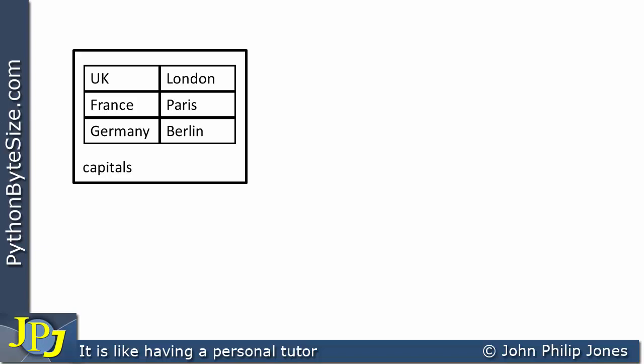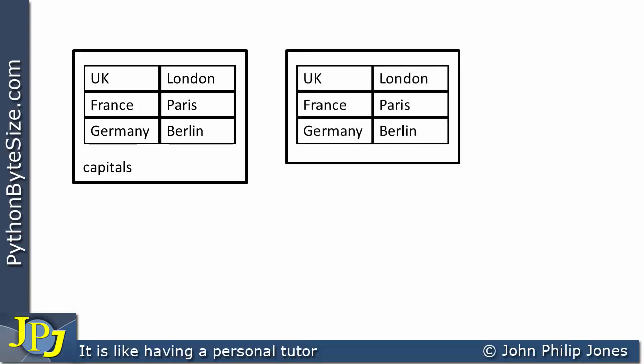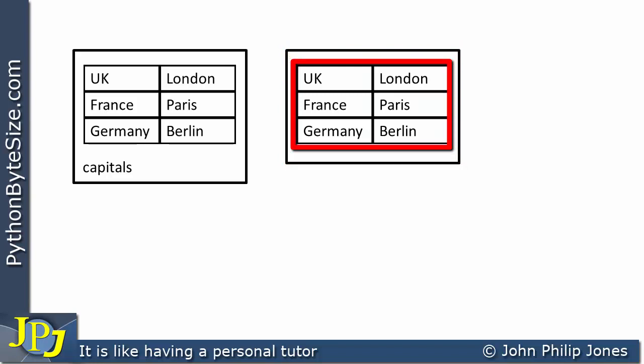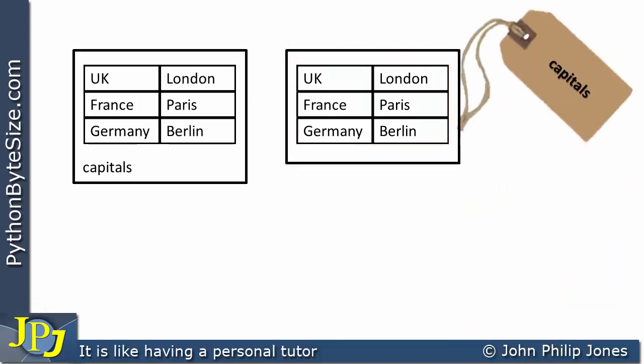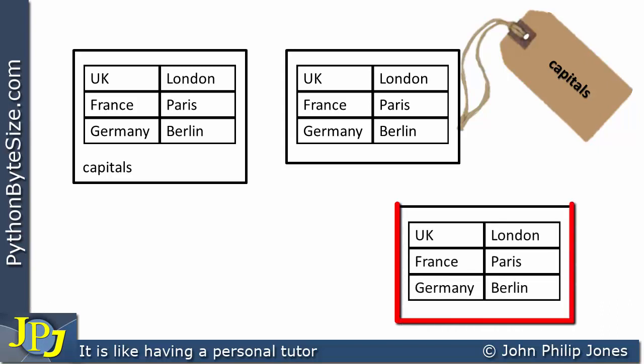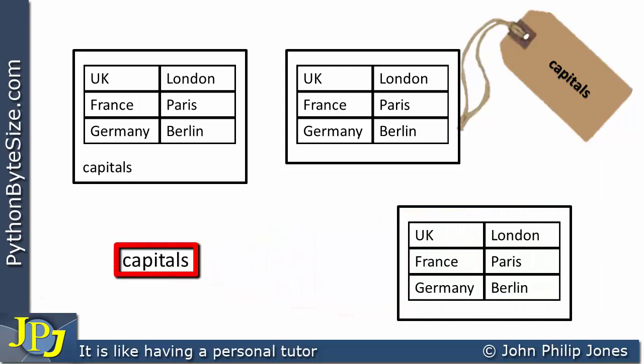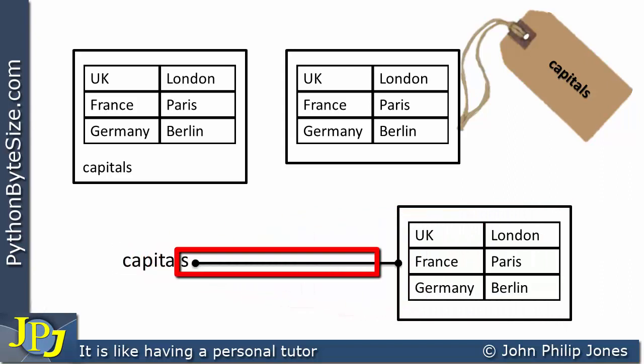Here you can see a schematic diagram of a dictionary. We can represent this in a number of different ways. One way is as I've been discussing, with keys and values in columns. Another way shows a container that contains the items, with the name 'capitals' labelling the whole thing. A third way shows the container with items, and separately the name which is bound to the container.